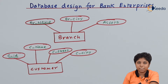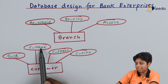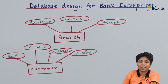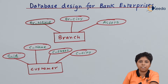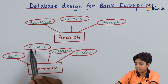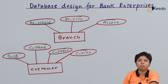For the customer entity, we have attributes: customer ID (C_ID), customer name (C_name), customer street (C_street), and customer city (C_city). The customer ID is the primary key as it uniquely identifies each customer. A combination of C_ID and C_name could serve as a candidate key but not a super key.